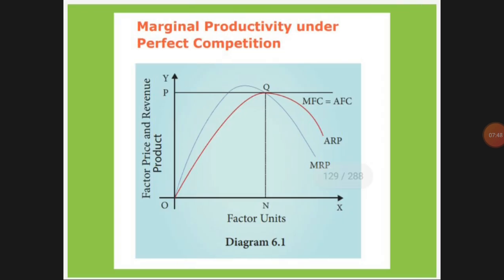This can be explained using the diagram for perfect competition. On the X-axis we have the factor unit, and on the Y-axis the product price. MRP is marginal revenue product, ARP is average revenue product, AFC is average factor cost, and MFC is marginal factor cost. Here, AFC is a horizontal blue color line, and MFC coincides with it.